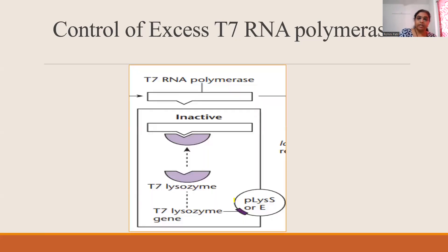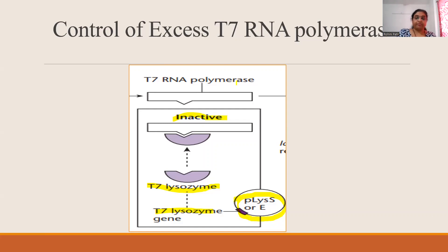To control the excess T7 RNA polymerase from leaky transcription, one more plasmid compatible with pET is added — pLYSS or pE plasmid. This encodes T7 lysozyme, which acts on T7 RNA polymerase and inactivates it. Thus, in the absence of inducer, there will be no expression of the cloned gene, providing very tight control over gene expression.